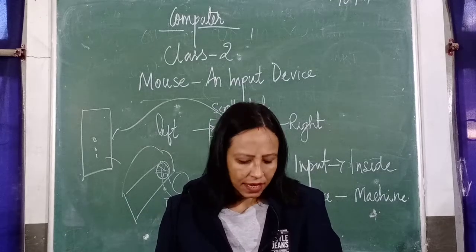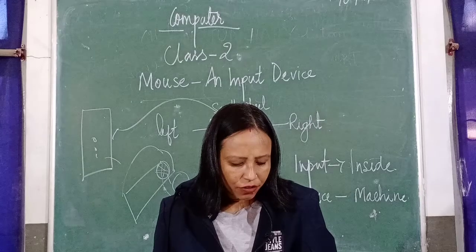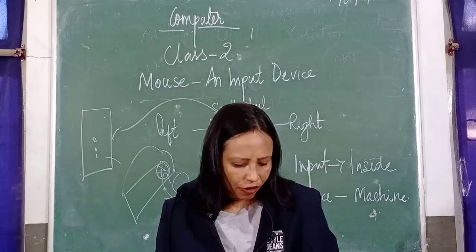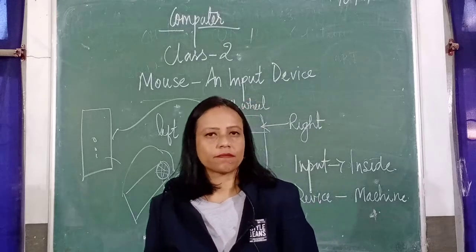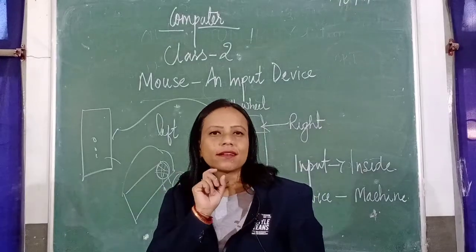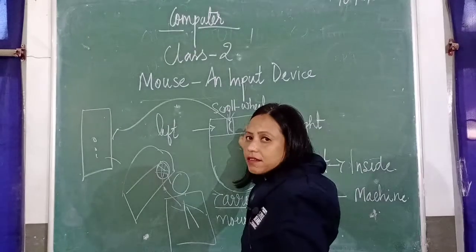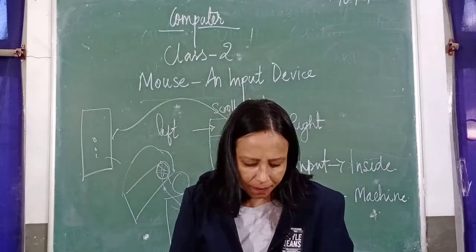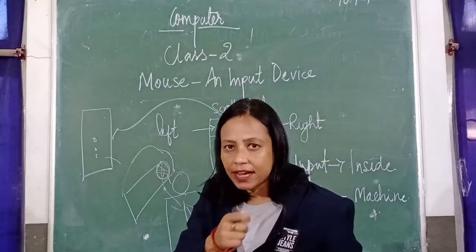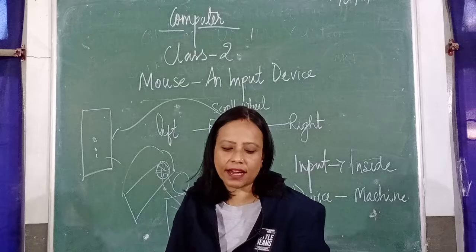Now let's look at mouse button actions. The act of pressing and releasing the mouse button creates a click sound. Mouse buttons are used to perform the following actions: clicking, right-clicking, double-clicking, and dragging and dropping. When you press the left mouse button once it makes a click sound — that is called clicking. Pressing the right button is called right-clicking. Pressing either button twice is called double-clicking. Holding and moving the mouse is called dragging and dropping.